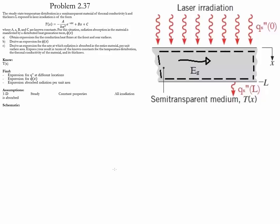Problem 2.37. This is a steady-state conduction case in which the temperature distribution of a semi-transparent material is given. The thermal conductivity and thickness of this material are also provided. This material is exposed to laser irradiation.